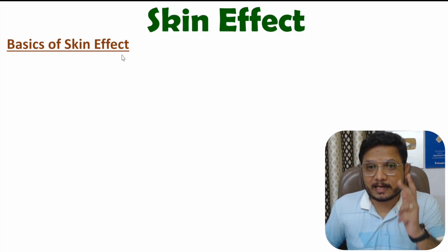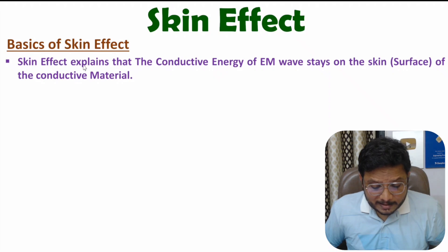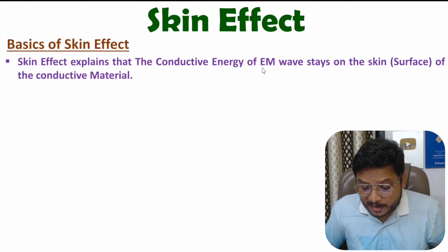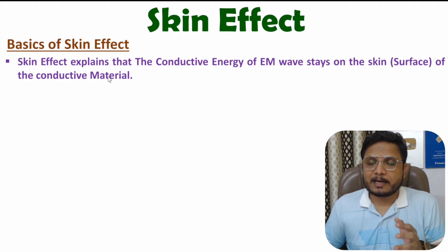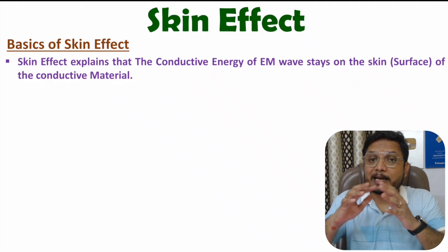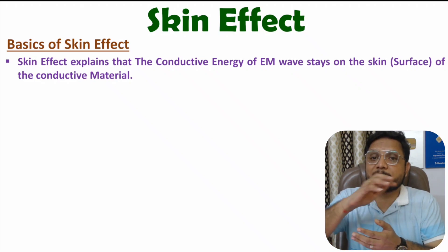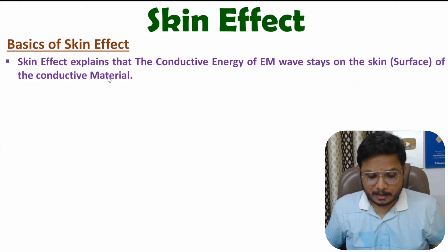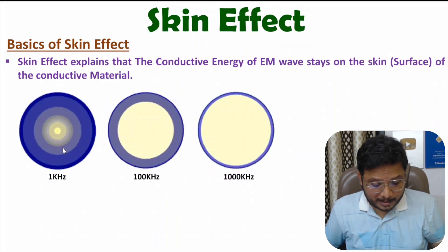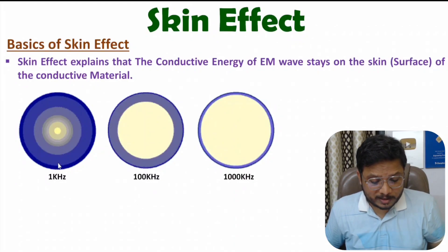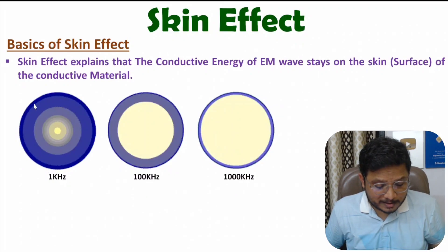One should know what skin effect is. Skin effect explains that the conductive energy of an EM wave stays on the skin of a conductive material — meaning the energy of the EM wave within a conductive material stays on the surface. For example, here we have a cross section of a conductor, where with this first conductor we are having an EM wave with a signal of 1 kilohertz. At that time, you can observe more energy staying on the skin, and as you go inside, the energy of the EM wave is decreasing.